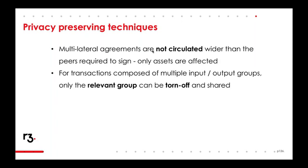I won't go into the Merkle tree approach in too much depth for this webinar as it's a more advanced topic, but suffice to say you can use this technique to hide certain aspects of a transaction. A good use case is when using an oracle service — you might want an oracle to attest to whether some market data is correct. You would provide them the command containing the market data, but you wouldn't necessarily want them to see the input and output states. You can hide those with the partial Merkle tree approach and just show them the command.